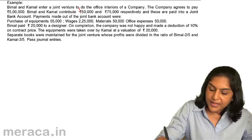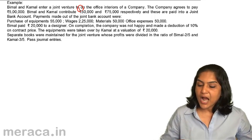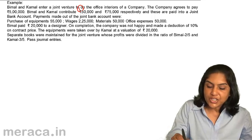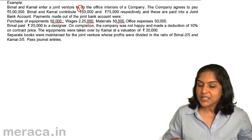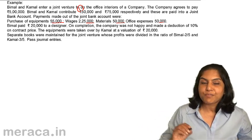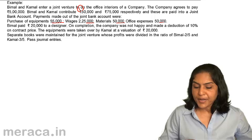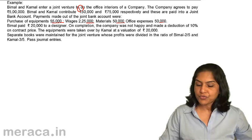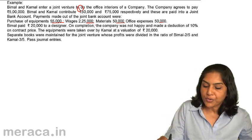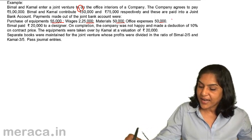The first entry would be the capital contribution by Bimal and Kamal to the joint bank account. Payments made out of the joint bank are: purchase of equipment 55,000; wages 2,25,000; materials 50,000; office expenses 50,000. Totally, the money spent is 2,25,000 + 55,000 + 50,000 + 50,000 giving us 3,80,000.